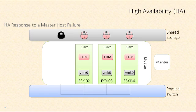At this point, an election kicks off. The host with access to the most datastores will win the election. If it's a tie, the UUID of the host will act as a tiebreaker. In this case, let's assume ESXi 04 has now become the master.